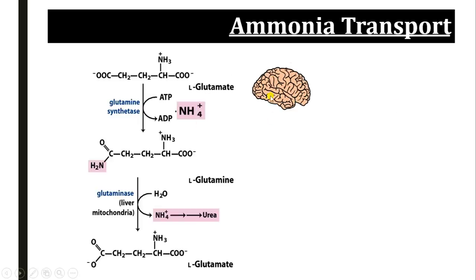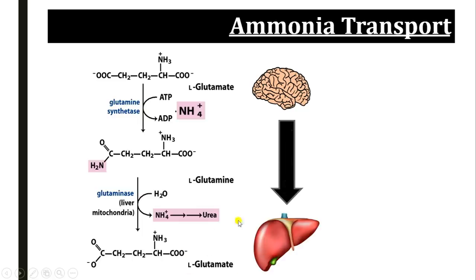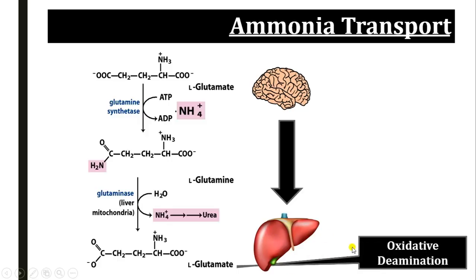In the same way, ammonia present in the brain is taken up by glutamic acid and forms glutamine with the help of glutamine synthetase. This glutamine is transported to the liver, where the enzyme glutaminase removes the amino group from glutamine and converts it back to glutamic acid. By this way, ammonia from the brain is transported to the liver, and this L-glutamic acid undergoes oxidative deamination, releasing ammonia into the liver.